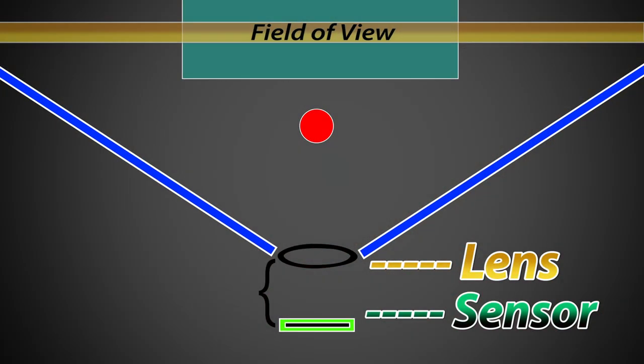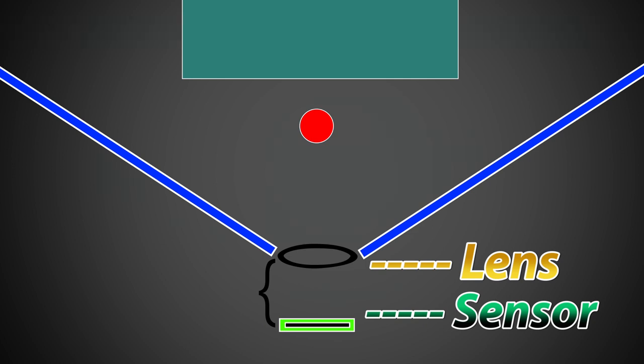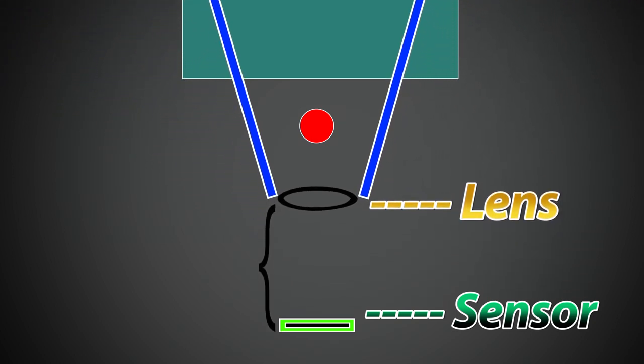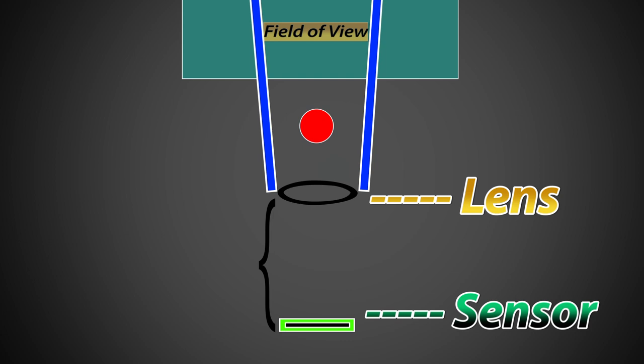Now some of you are probably wondering why in the world does this happen? It's an optical effect based on how lenses work. When we have a very wide field of view, more of the background is going to fit into the image. When we have a very narrow field of view, less of the background fits in the image and the optical effect is that it is magnified and appears closer — it's not closer, it appears closer. This is a very valuable tool if you have a secondary subject.